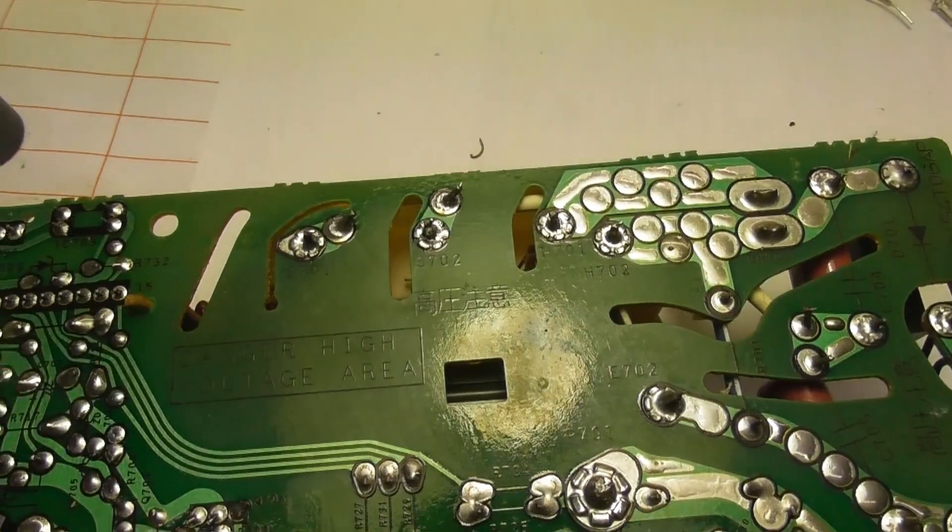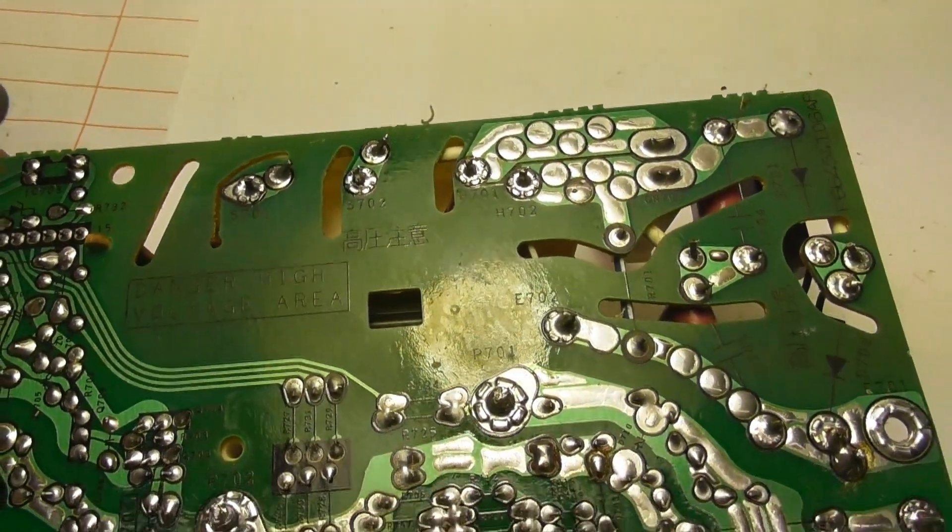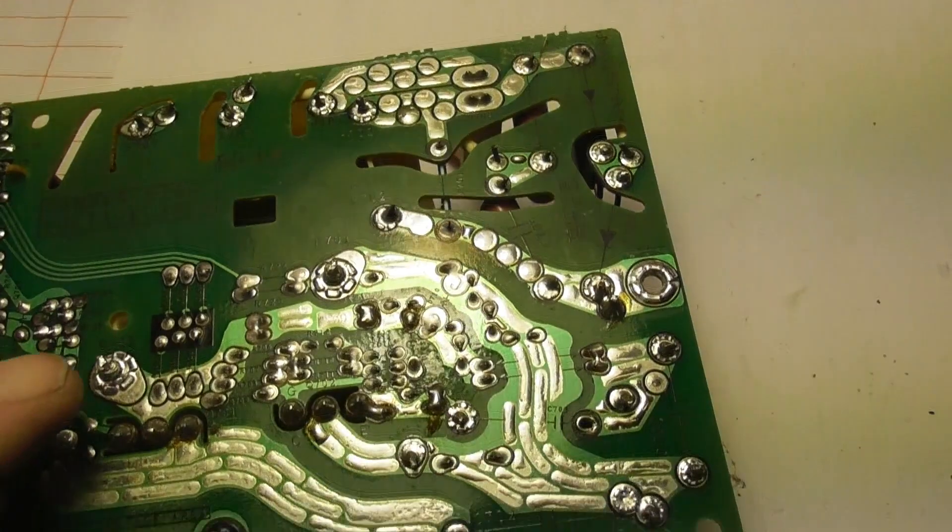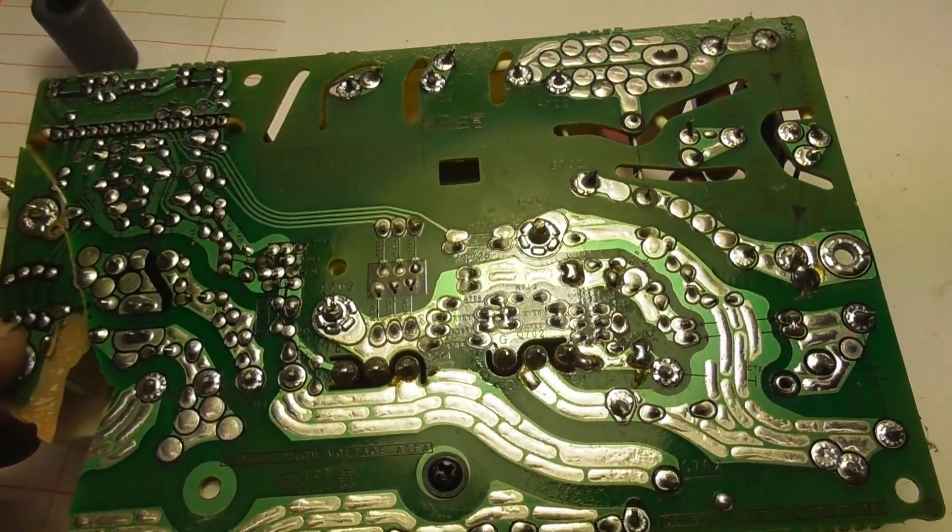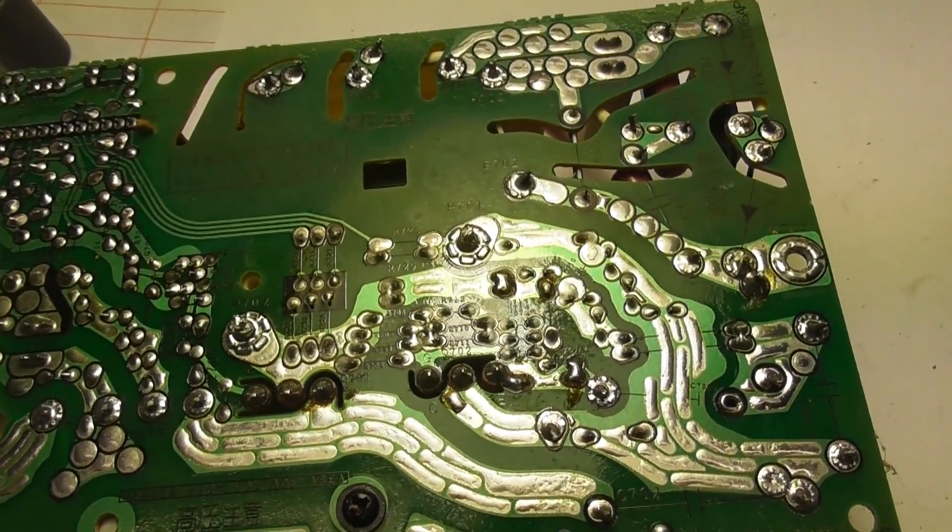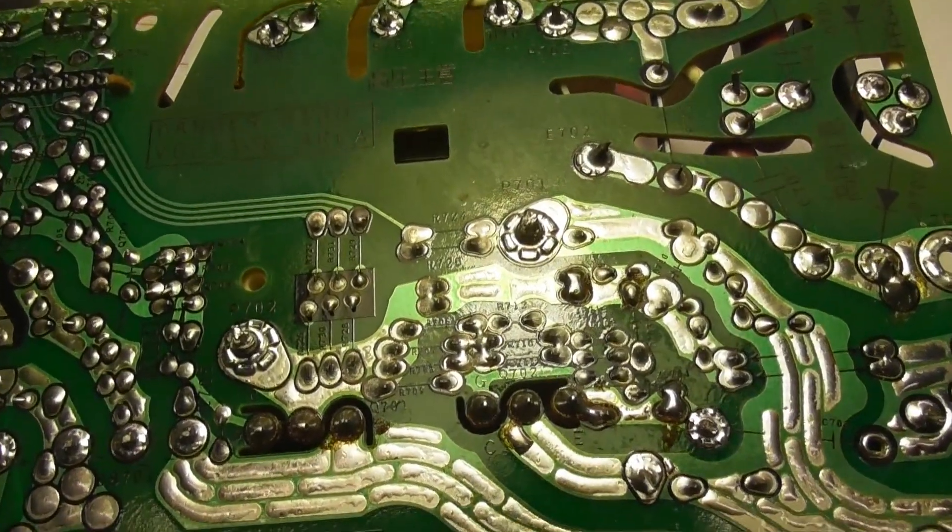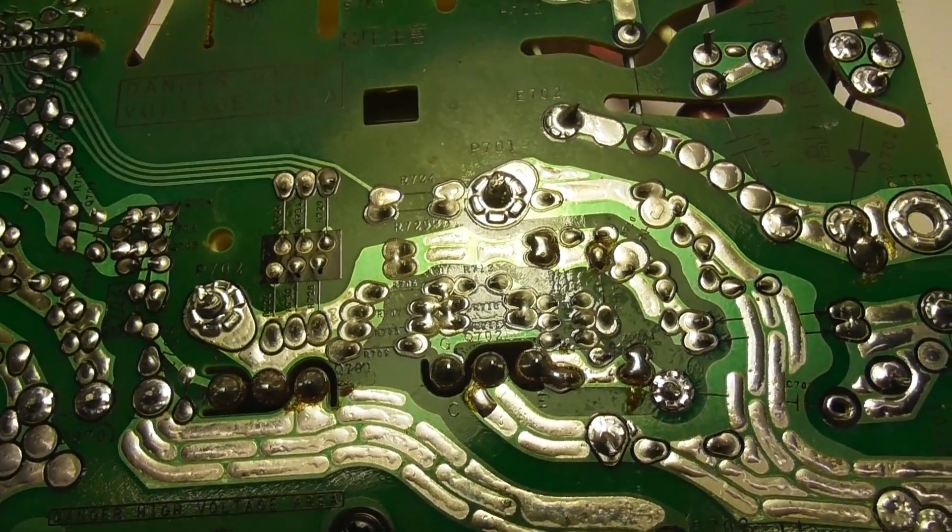And the high current ones are this and that one. So they come from the thick wires from the coil via the MOSFETs. So I'm just gonna have a bit closer look at that.